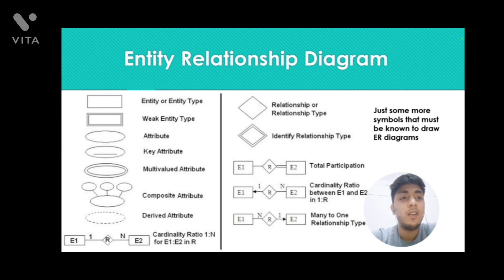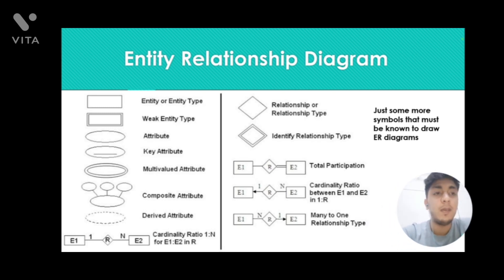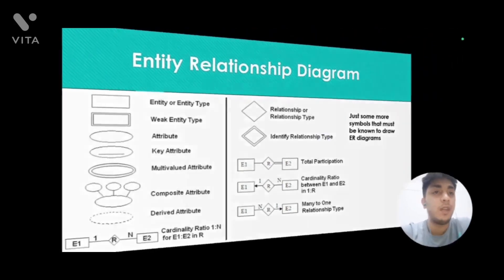Each entity has a relationship with other entities, and a relationship is denoted by a diamond. A double diamond represents an identifying relationship, which is a relationship between two weak entity types. A relationship can be of many types: one-to-one, many-to-one, and many-to-many. Each relationship has a different cardinality — one-to-one has a ratio of one to one, and one-to-many has a ratio of one to many.